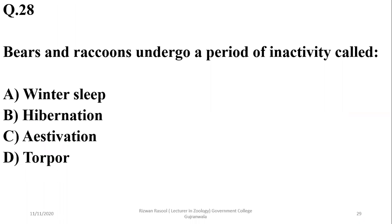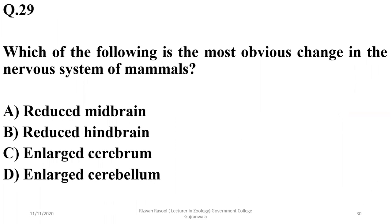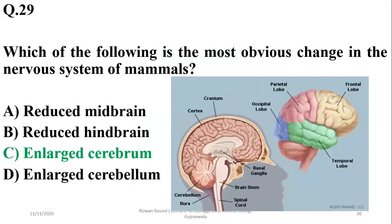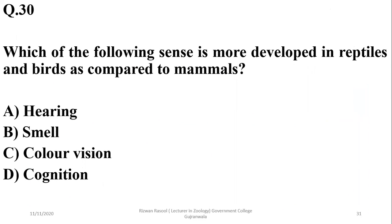Question 27: Bears and raccoons undergo a period of inactivity called winter sleep. Question 28: The most obvious change in the nervous system of mammals is the enlarged cerebrum, which has developed better throughout their long evolutionary history compared to other groups. Question 29: Which sense is more developed in reptiles and birds compared to mammals? Reptiles and birds have better color vision than mammals. The right option is C.